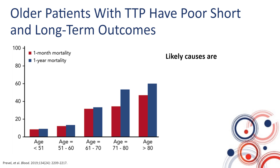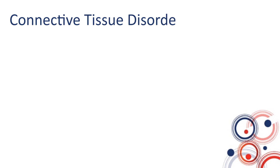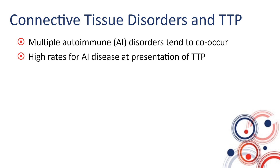There are multiple causes of this, including delays in diagnosis and more ischemic organ impairment in older adults who may start with some organ dysfunction. The next most common comorbidity in patients with TTP is autoimmune disorders. There is a tendency for multiple autoimmune disorders to co-occur in the same individual, highlighting perhaps a genetic predisposition to autoimmunity, and there are high rates of autoimmune disease in patients presenting with TTP.